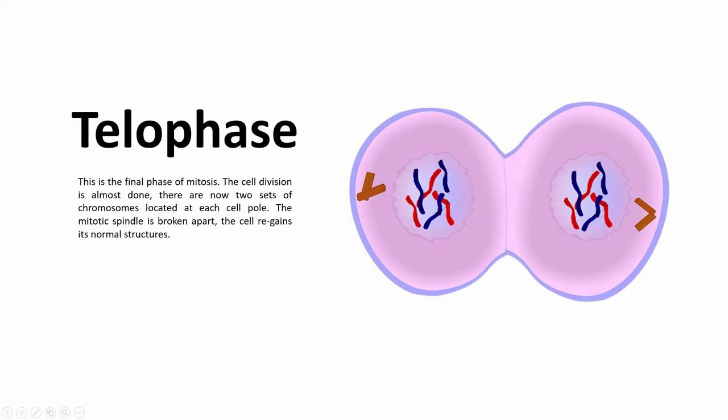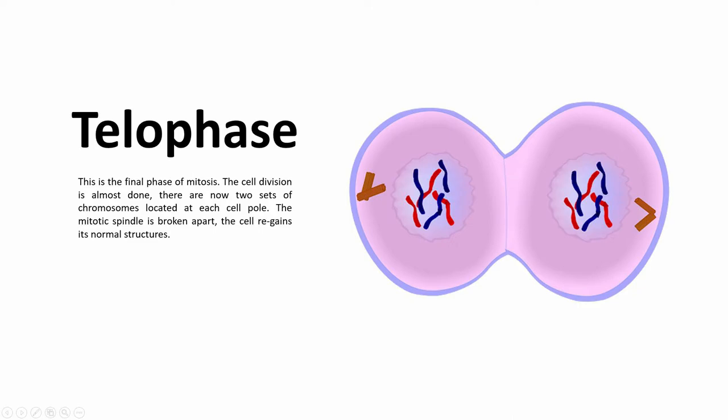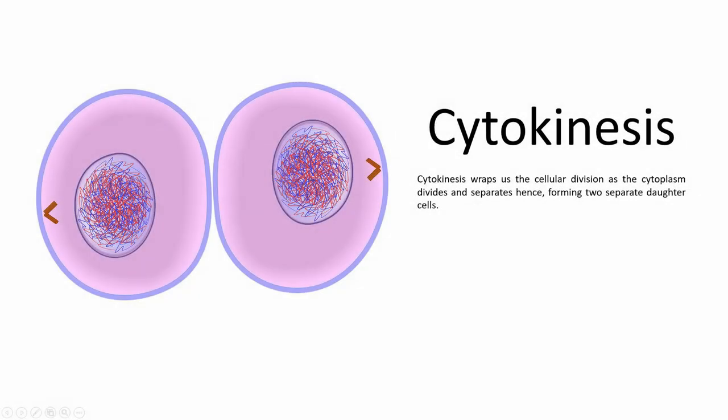That is where cytokinesis comes into play. Cytokinesis wraps up the cellular division as the cytoplasm divides and separates, forming two separate daughter cells. After that, there are now two identical daughter cells from a single parent cell, indicating that mitosis has finished.